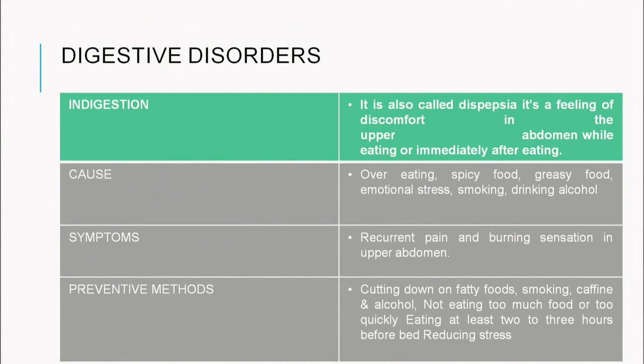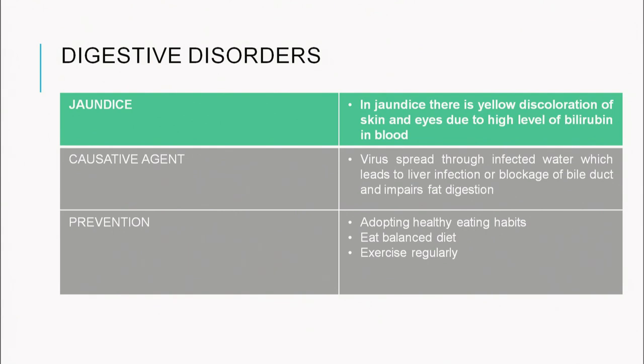The symptom of indigestion is recurrent pain in the upper abdomen, and it can be prevented by not smoking, reducing caffeine or alcohol, and eating light food. The last disorder is jaundice — yellow discoloration of the skin and eyes due to a high level of bilirubin in the blood. The causative agent is a virus spread through infected water, leading to liver infection, liver cancer, or blockage of the bile duct, which impairs the emulsification and digestion of fats. Prevention involves adopting a healthy lifestyle, eating a balanced diet, and exercising regularly.